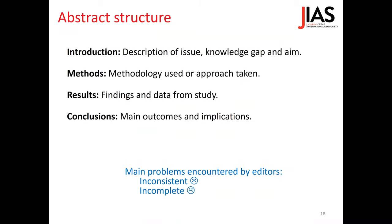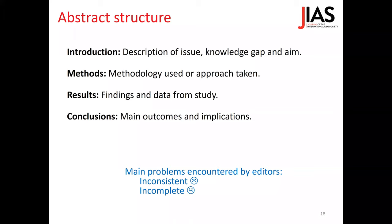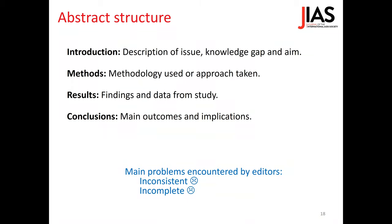For research manuscripts, the abstract is usually structured as: introduction, methods, results, and conclusion. In the introduction, you describe the issue, the knowledge gap, and the aim of your study. In the methods, you describe the methodology and approach. In results, you describe your findings. In conclusions, the main outcomes and implications. The abstract has no figures, tables, references, or acronyms unless an acronym is used more than three times. If you have a clinical trial registration number, it should go in the last line. Don't offer results that are not significant, because in the abstract there is no room for speculation.